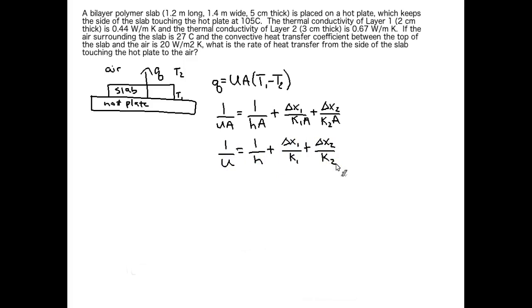Now remember, because this is 1 over U is equal to an entire right-hand side, I can't just flip all of these individual terms on the right-hand side to get U. I have to solve for 1 over U and then take 1 over whatever that number is. So if 1 over U is 0.1, let's say, then U is 1 over 0.1 and that's 10.